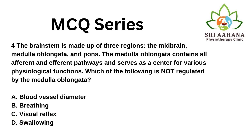The brainstem is made up of three regions: the midbrain, medulla oblongata, and pons. The medulla oblongata contains all afferent and efferent pathways and serves as a center for various physiological functions. Which of the following is not regulated by the medulla oblongata? A. Blood vessel diameter, B. Breathing, C. Visual reflex, D. Swallowing. The correct answer is C, visual reflex, which is controlled by the midbrain. Options A, B, and D are controlled by the medulla oblongata.